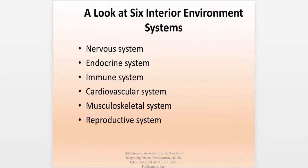There are many different interior environment systems within the human body. This chapter focuses upon six, and we're going to spend a little bit of time going over each one and talk about some of the disorders of these systems — disorders that we're likely to run into as we go about our work in the social work field.